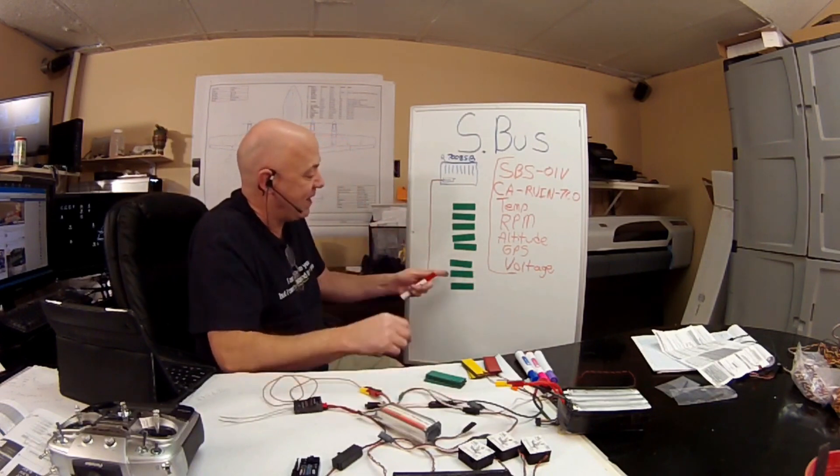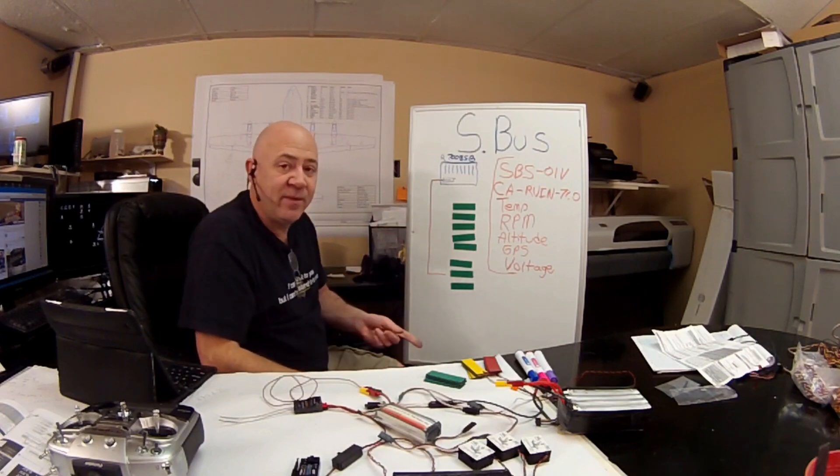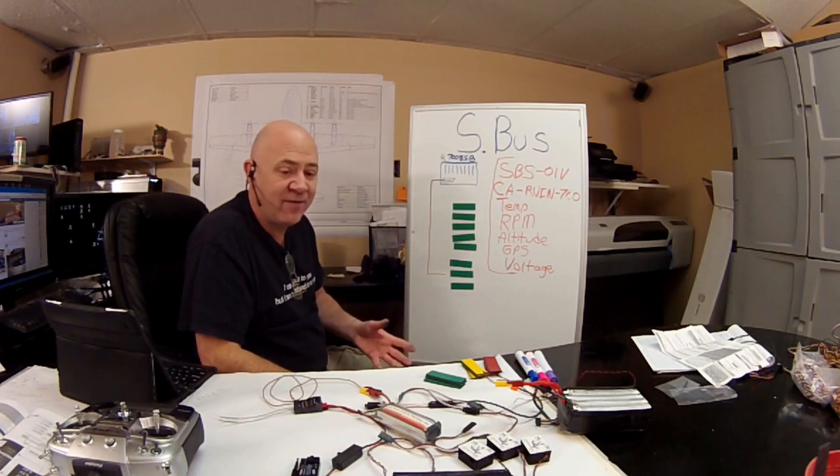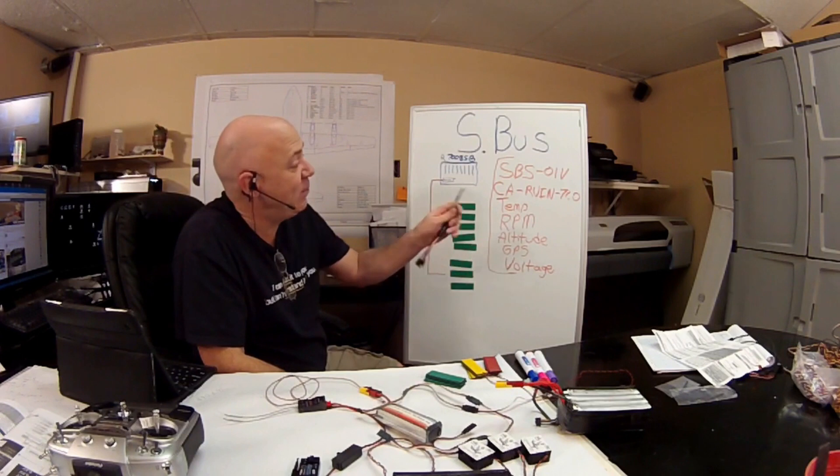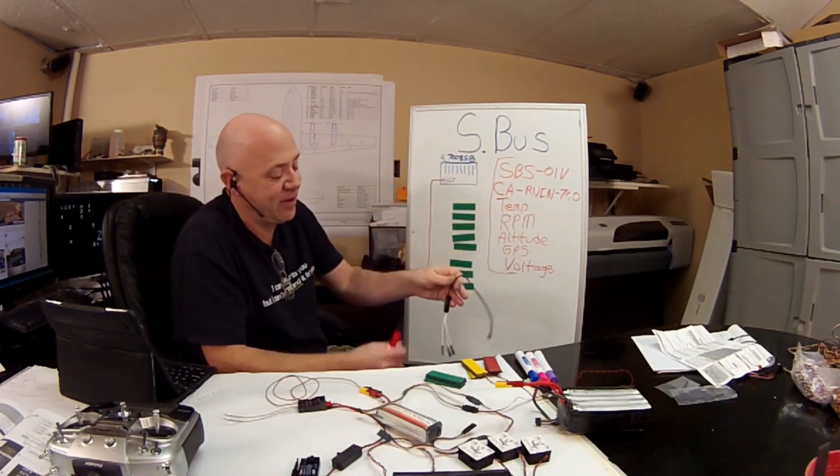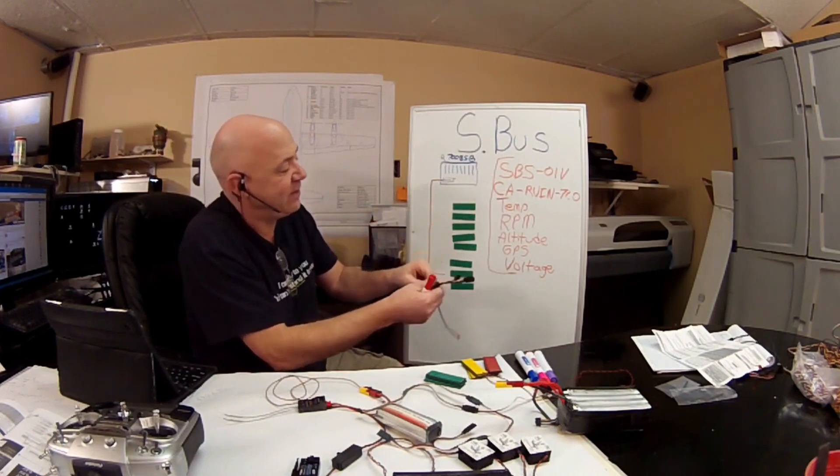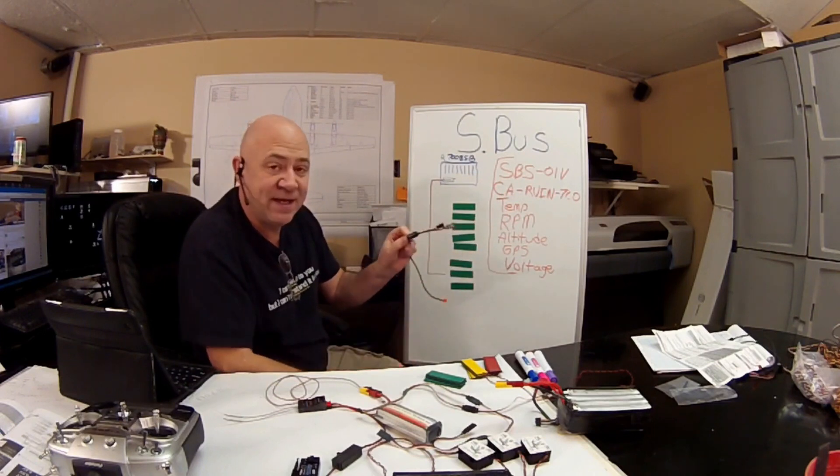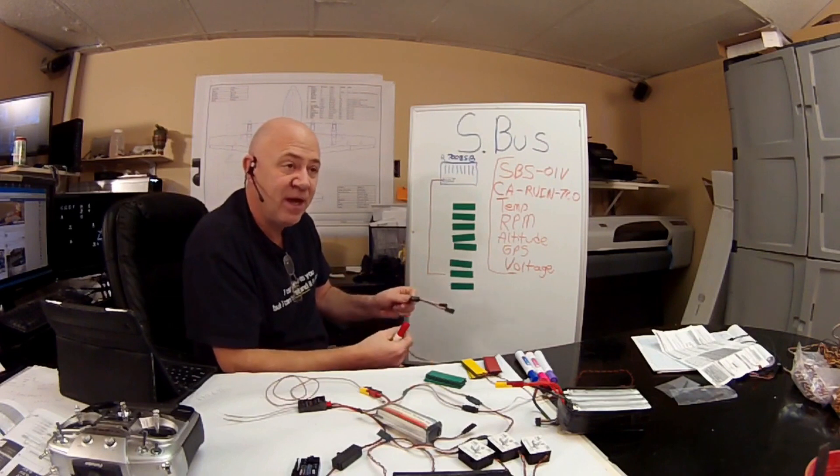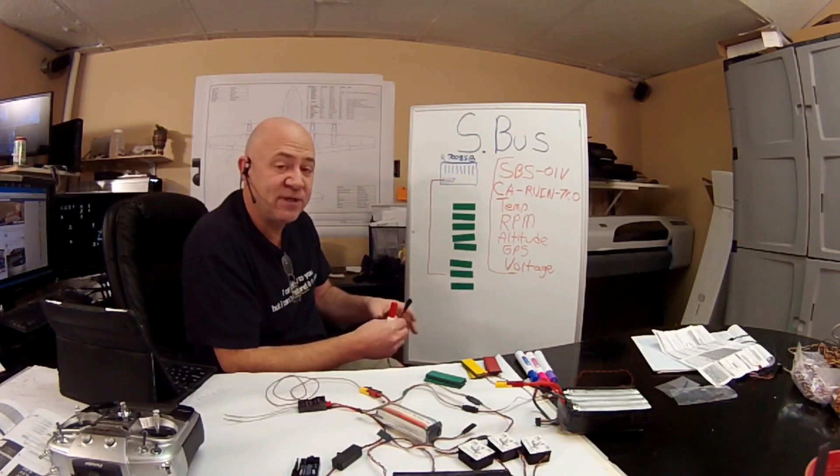And I want to run them from SBUS. Another email I got is somebody says I can't afford to buy all the SBUS servos. You don't have to buy the SBUS servos, you just need to buy this decoder, it's an SBD1. The SBD1 is basically an encoder that takes SBUS data communication and turns it into the regular digital servo communication.